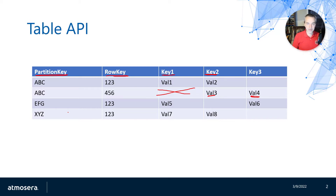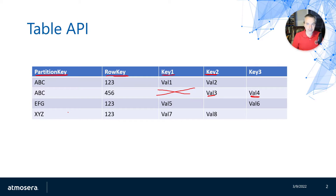Table APIs don't enforce schemas, foreign keys, or any other constraints you'd associate with a table-oriented relational database. This isn't designed to be a relational database — it's basically for storing data in a tabular format so that you can quickly access and write that data.